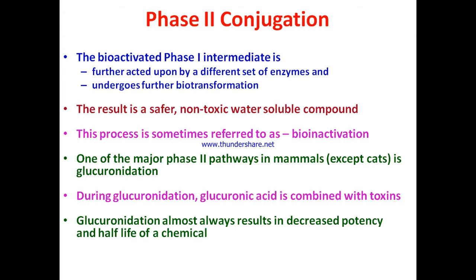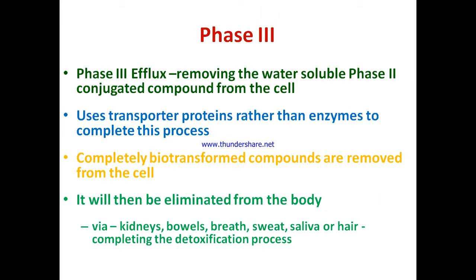One of the major phase two pathways in mammals is glucuronidation. During glucuronidation, glucuronic acid is combined with toxins. Glucuronidation almost always results in decreased potency and half-life of a chemical — the toxin becomes less potent, its half-life decreases, making it non-toxic or less toxic, and its presence is shortened as it gets excreted.